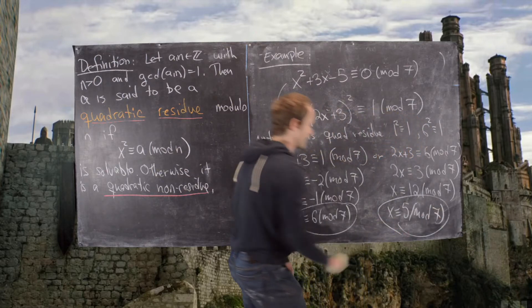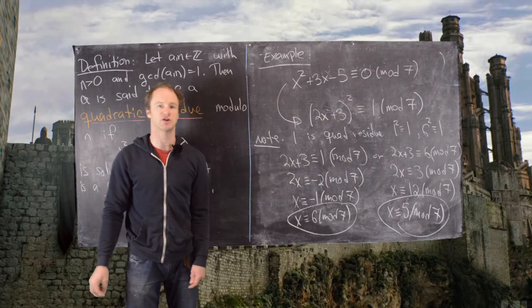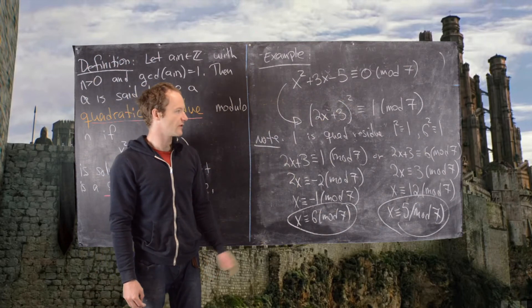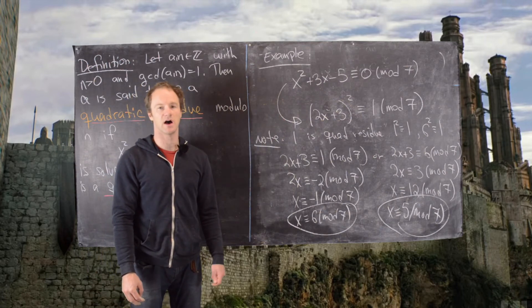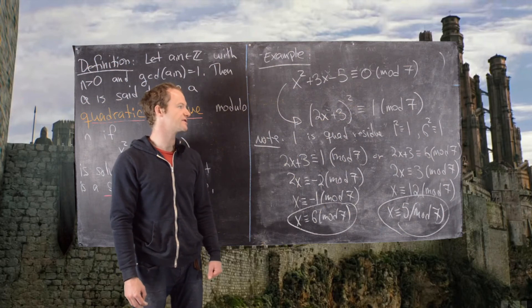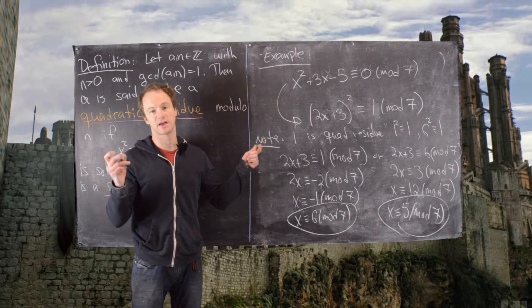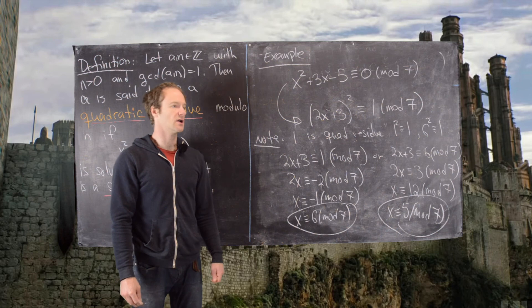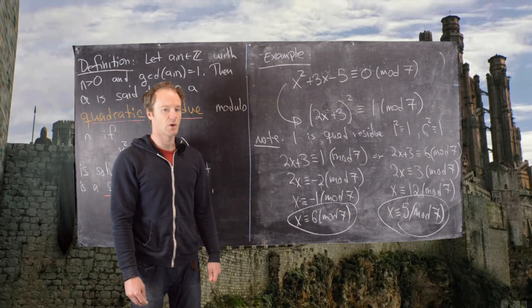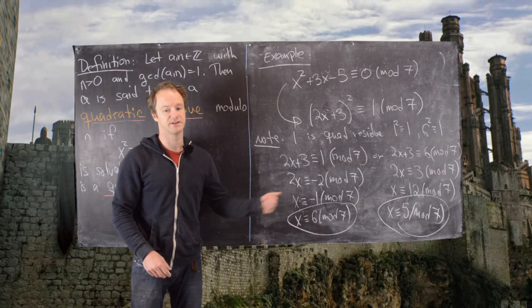So there we have our 2 solutions to this original equivalence. And we use this method involving quadratic residues and something like a modular quadratic formula. This is the end of the example.